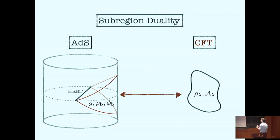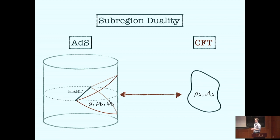The statement of sub-region duality is that I can reconstruct physics in the entanglement wedge by having access to information in a particular sub-region of the CFT. More precisely: the geometry, the state of the bulk fields, and the dynamics of local operators in the entanglement wedge can be reconstructed from the state and the algebra of operators localized in the corresponding sub-region of the boundary. I can do this independently for every entanglement wedge, but all these wedges are parts of the same global spacetime — they can overlap, contain each other — so they clearly satisfy certain consistency relations.